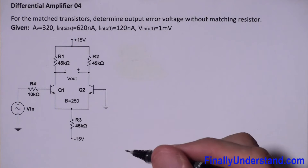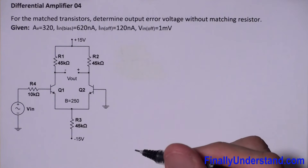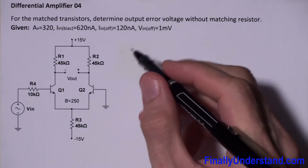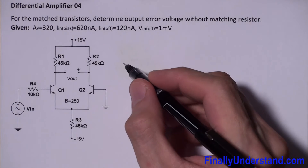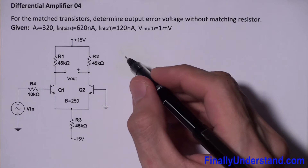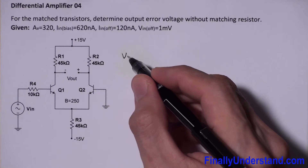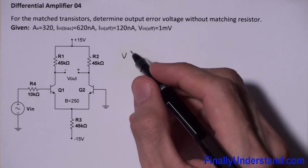Next, I'm supposed to remember four magic formulas — I call them the four magic formulas. The first one is the formula for the input error voltage due to the input bias current.